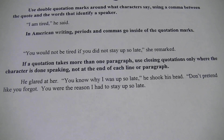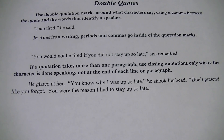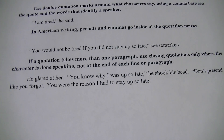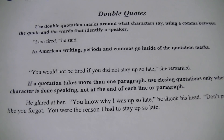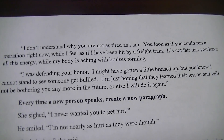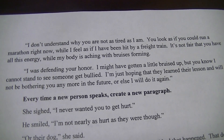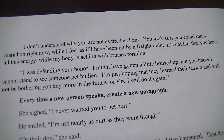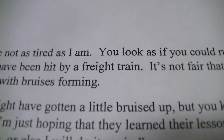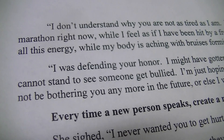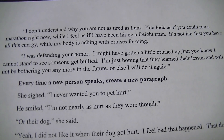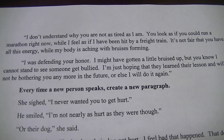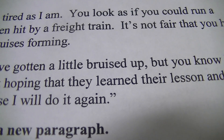If a quotation takes up more than one paragraph, use closing quotations only where the character is done speaking — not at the end of each line or paragraph. He glared at her: "You know why I was up so late." He shook his head. "Don't pretend like you forgot. You were the reason I had to stay up so late." Notice at the end of this paragraph, there is no closing double quote because when we turn the page he's still speaking. He continues: "I don't understand why you are not as tired as I am. You look as if you could run a marathon right now. I feel as if I've been hit by a freight train. It's not fair that you have all this energy when my body is aching with bruises forming." Again, no double quote at the end of that paragraph. But when we start the next paragraph to show he's still speaking, there is a double quote there. "I was defending your honor. I might have gotten a little bruised up, but I cannot stand to see anyone get bullied. I'm just hoping they learn their lesson and will not be bothering you anymore in the future, or I will do it again." Now he's done speaking, so we have that closing double quote at the end.